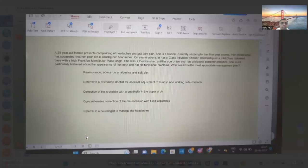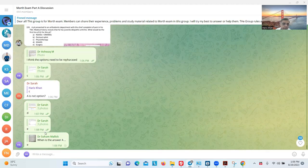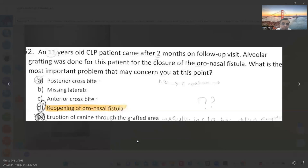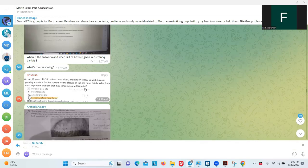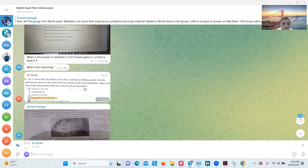A 25-year-old male complaining of headache and joint pain. She is a student currently studying for final exam. Her chiropractor has suggested that her poor bite is causing the headache. On examination, she has a class 2 division 1 incisor relationship on a mild class 2 skeletal base with high angle. She has been a thumb sucker until the age of 10 and has bilateral proclined incisors, but she's not particularly bothered about the appearance of her teeth and has no functional problem. What will you do? Referred by neurologist. Presented complaining of headache. Might be—then only option has the same logic. We discussed that if the canine is bothered, it's a surgeon's. So D. Not bothered about opening an oral-antral fistula—it's a surgeon's responsibility, right?